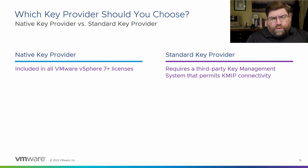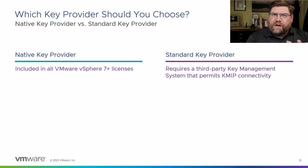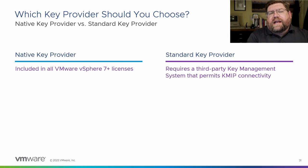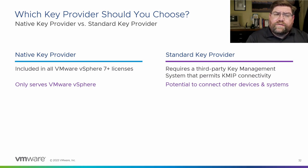Let's compare native key provider versus standard key provider. Native key provider is supported and available in all license levels of vSphere — you can turn on vTPMs and native key provider at all license levels. Welcome to Windows 11. Other things like vSAN encryption and VM encryption require other licenses — I think the advanced vSAN license, and Enterprise Plus for VM encryption. A standard key provider does require a third-party KMS system, which costs money. You're on your own picking one out, though the VMware Compatibility Guide has partners listed that are compatible. Native key provider only serves vSphere, whereas standard key providers can talk to whatever and often have a lot of extra functionality.